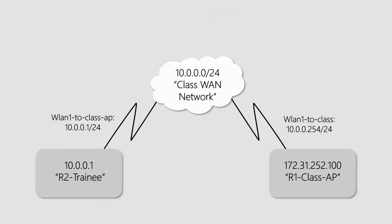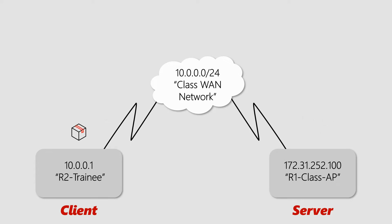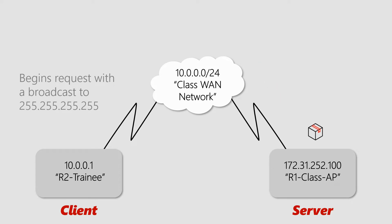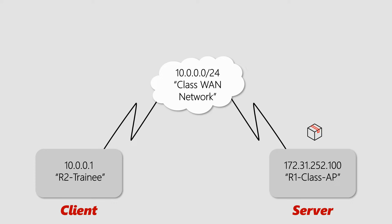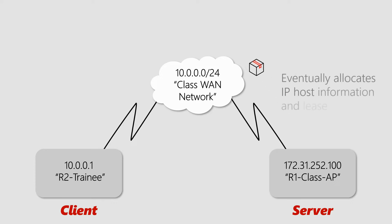First, setting up a DHCP client on the trainee router and a DHCP server on the class access point. Next, we got into the details of leases and saw how the DHCP client would begin the process by sending out a broadcast to 255.255.255.255, and went over the details of this interaction that would culminate with the DHCP server providing the necessary IP host information to the client.